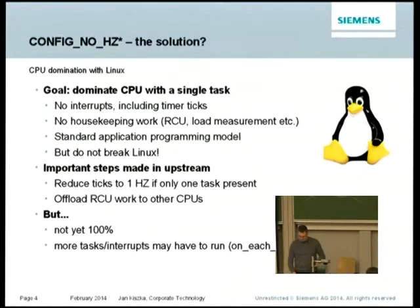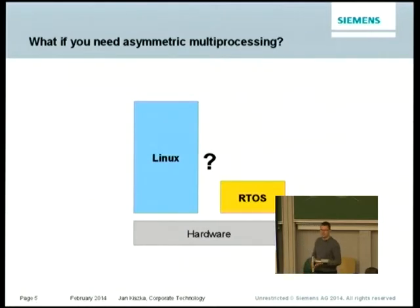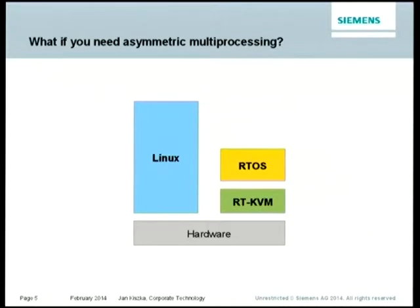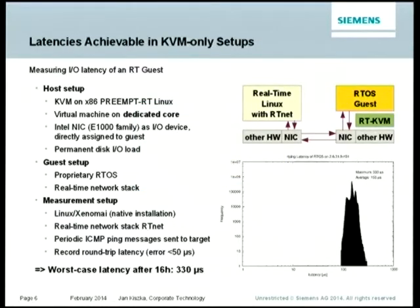It's an approach in the right direction, but there are other workloads that don't follow the Unix programming model. In industrial scenarios, you often have pre-existing software running certain workloads, and you want to combine these with multicore machines running a general-purpose OS like Linux. The typical approach is to use virtualization — for example, a real-time-extended KVM machine. You can lift the pre-existing software into a virtual environment, make sure virtualization fulfills your timing requirements. We did studies and have prototypes running with these scenarios.